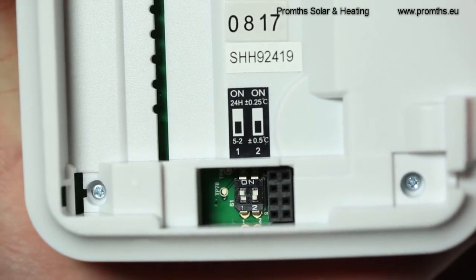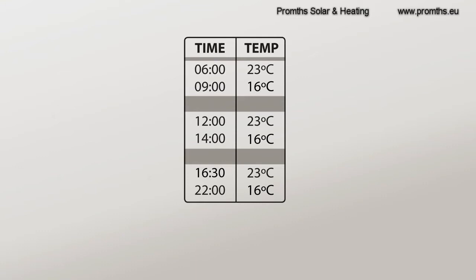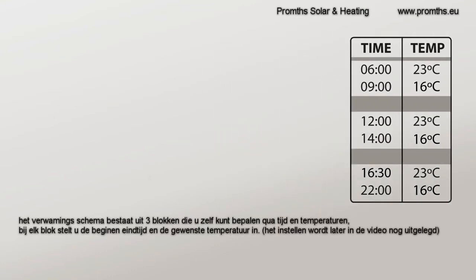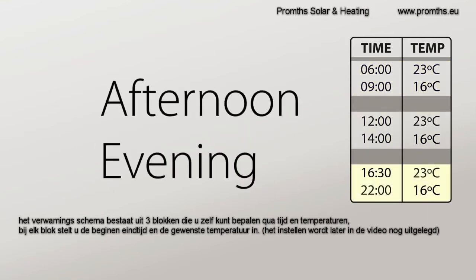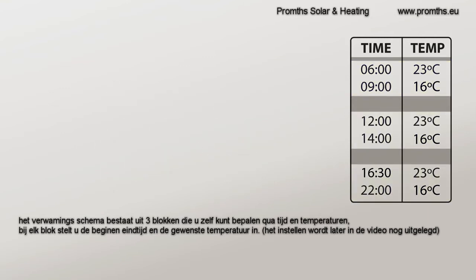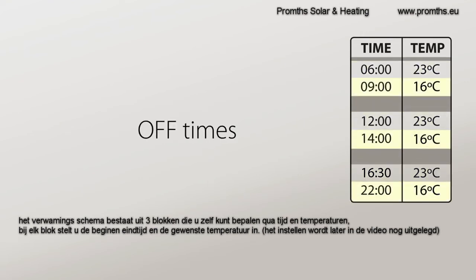The heating schedule is basically three events throughout the day. These are usually morning, lunchtime and afternoon or evening. Each event has two programs. The first is the on time and temperature. The second is the off time and temperature. This is an example of a typical heating schedule.